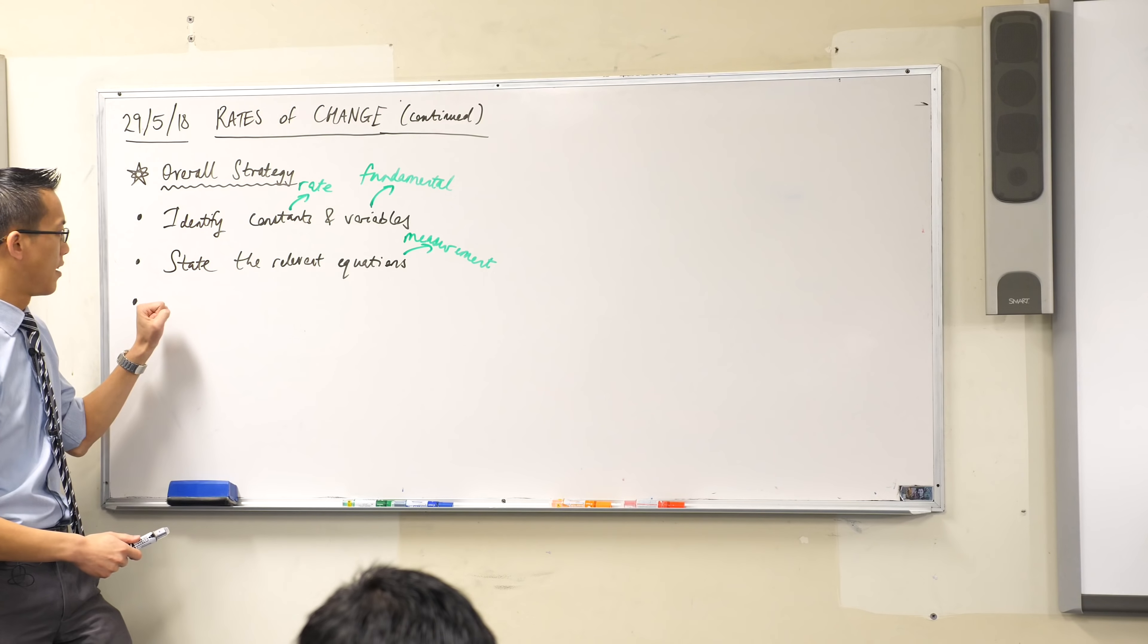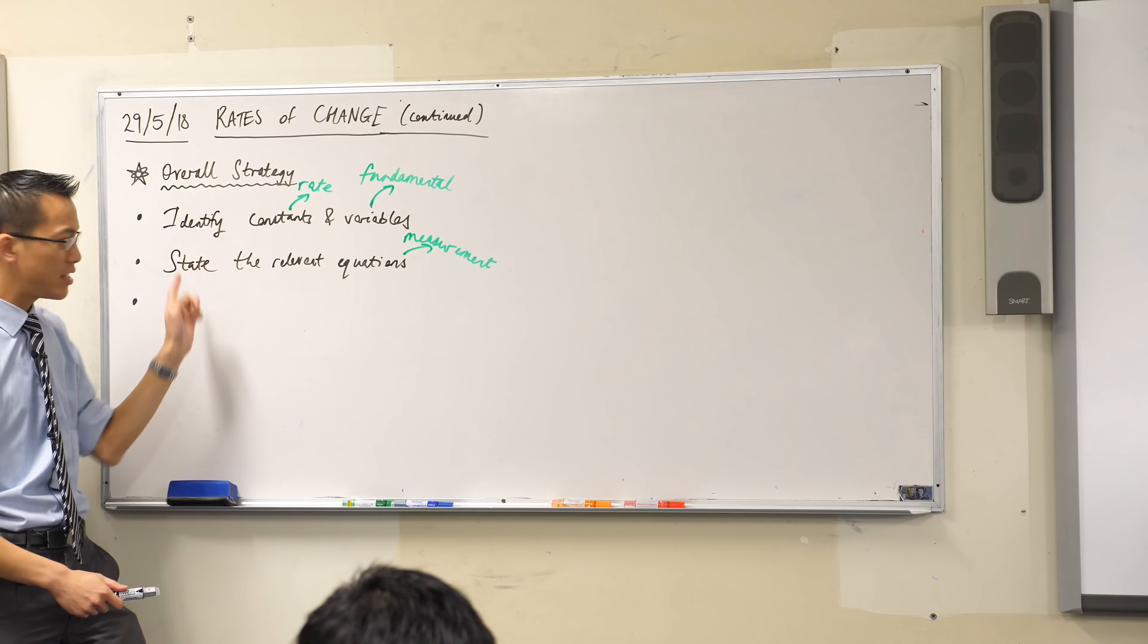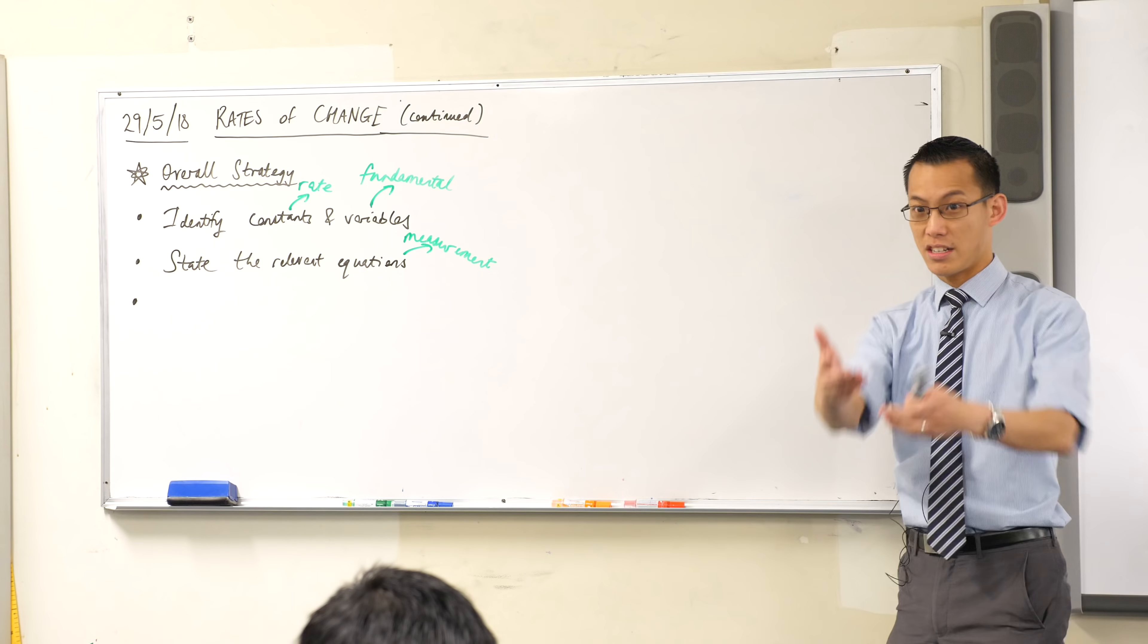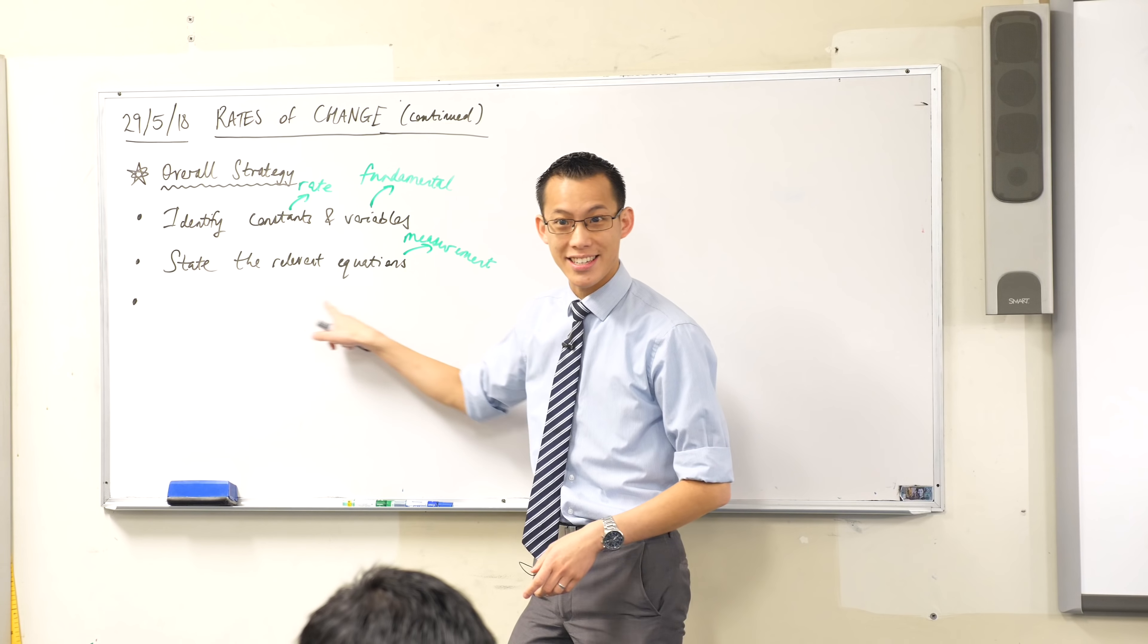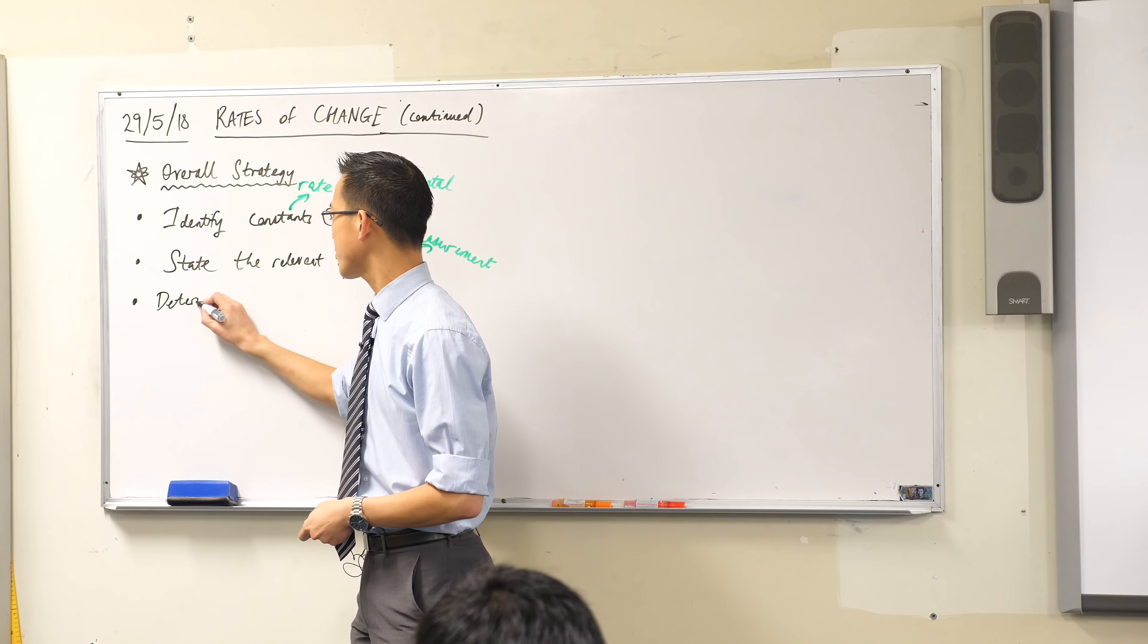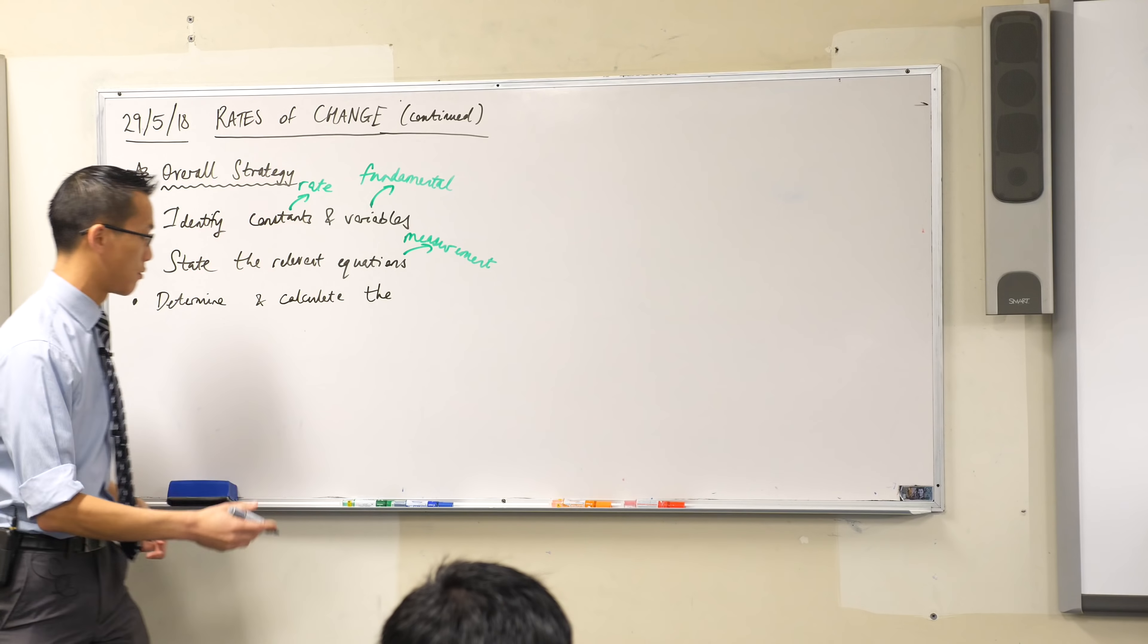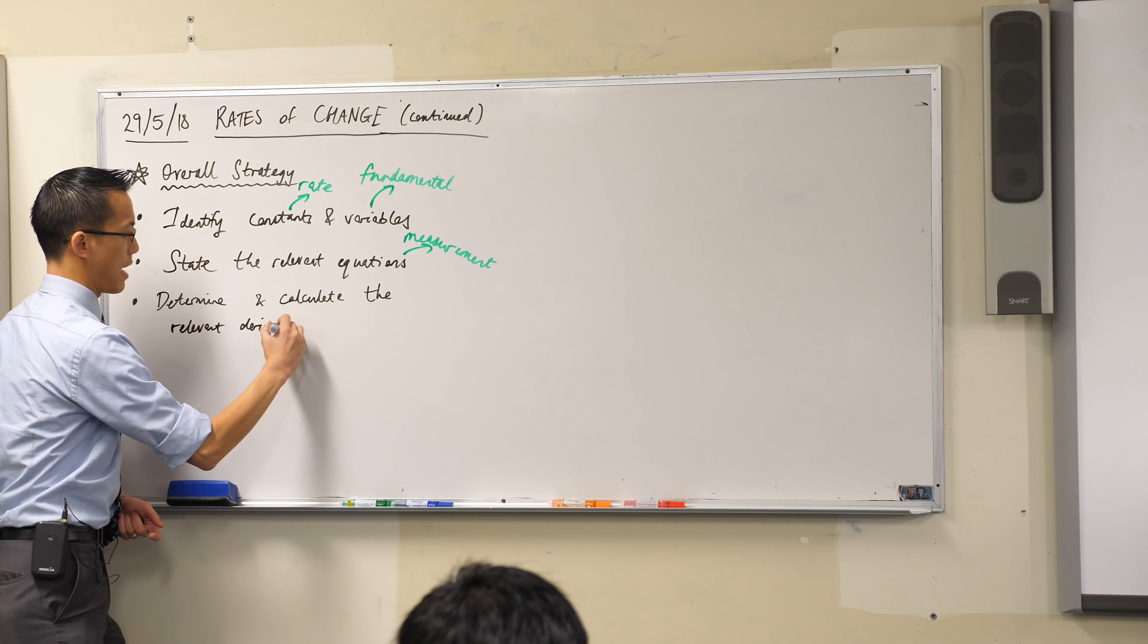Now, last major step. What did you then do to actually—I mean, this is a rates of change question. So what did you do to all of this stuff to actually start working on it? You didn't just say it. You had to do some things, right? You had to differentiate. Sometimes you might even integrate, right? So we're going to use some calculus here, right? So we're going to determine and calculate the relevant derivatives or integrals and that kind of thing.